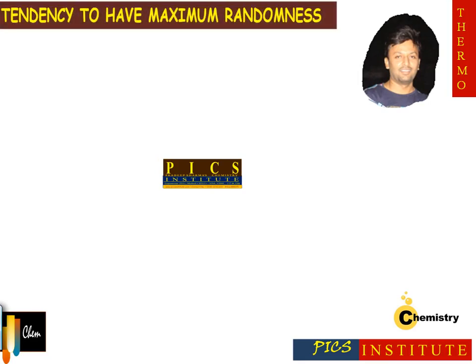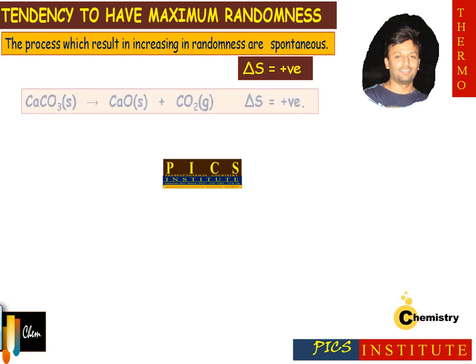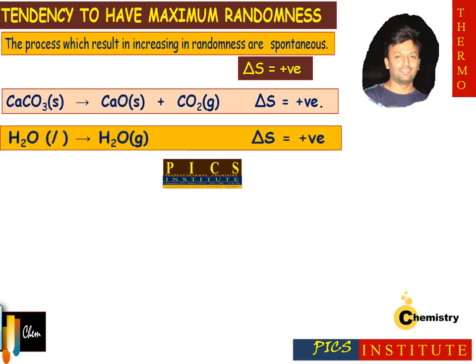The second driving force is the tendency to have maximum randomness. The process which results in an increase in randomness is spontaneous, or we can say for a process if ΔS is positive it will be spontaneous. For example, for the decomposition of calcium carbonate, ΔS is positive and entropy increases, hence the process is spontaneous. Similarly for evaporation of water, ΔS is again positive, hence the process is spontaneous.